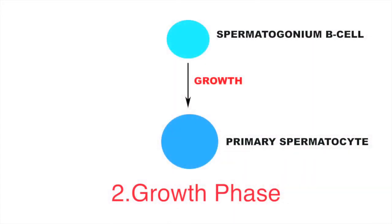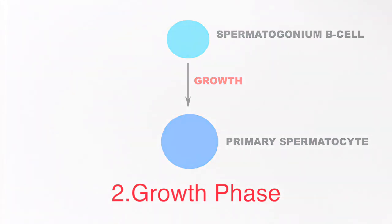In the growth phase, there is nourishment of the spermatogonium cell, which grows into spermatocytes. This nourishment is provided by cells called Sertoli cells. In this phase, only growth takes place — there is no mitosis here.